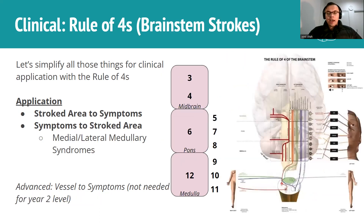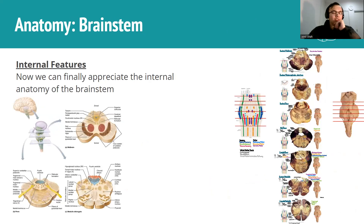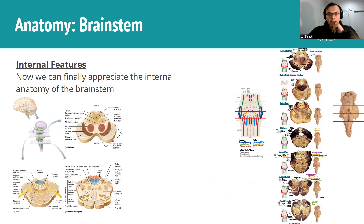At a higher level, you can tie in the vessel that's affected with the symptoms - correlate the signs and symptoms to the nuclei affected, then to the brainstem region, then to the corresponding vessel. You can do imaging to confirm which vessel is affected, but it's a useful exercise. That's not needed for year two though. We can also appreciate the internal features of the brainstem - cross sections reveal the nuclei at different levels, which is a nice way to tie it all together. Feel free to DM me or comment below if you have any questions.